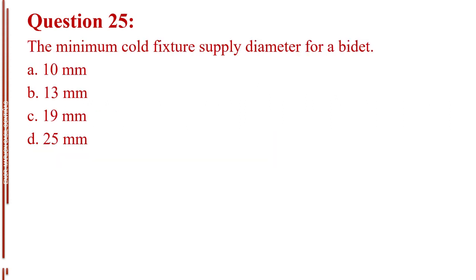Question number 25. The minimum cold fixture supply diameter for a bidet. Letter A, 10 millimeters. Letter B, 13 millimeters. Letter C, 19 millimeters. Letter D, 25 millimeters. The answer is Letter B, 13 millimeters.